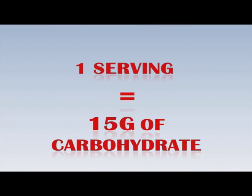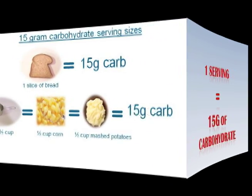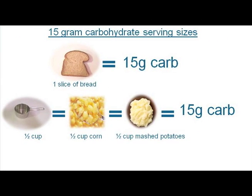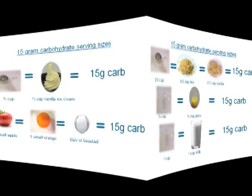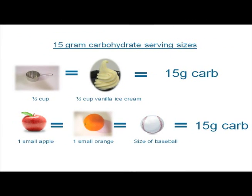So now that I know which foods have carbohydrates, how do I count them? Knowing that one carbohydrate serving or choice is equal to 15 grams of carbohydrate is a great place to start. Some basic serving sizes that equal 15 grams are one slice of bread, half cup of corn, peas, or mashed potatoes, one-third cup of cooked rice or pasta, one-half cup of juice, one cup of milk, one-half cup of vanilla ice cream, and one baseball-sized apple or orange.